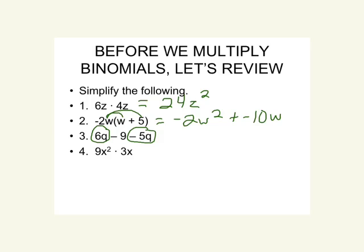Review problem number 3: 6q minus 9 minus 5q. Here we're subtracting — 6q minus 5q are like terms, we can combine those. When subtracting, we subtract the coefficients and the variable stays the same, so we get 1q minus 9. We can't combine those since they're not like terms, so the answer is 1q minus 9.